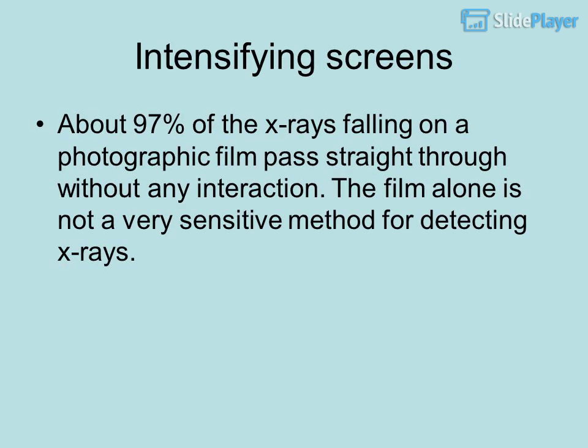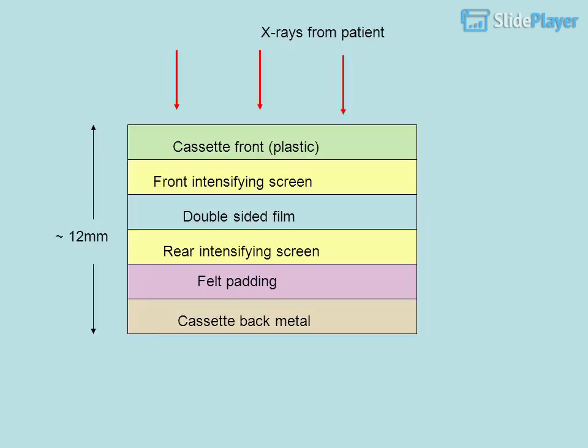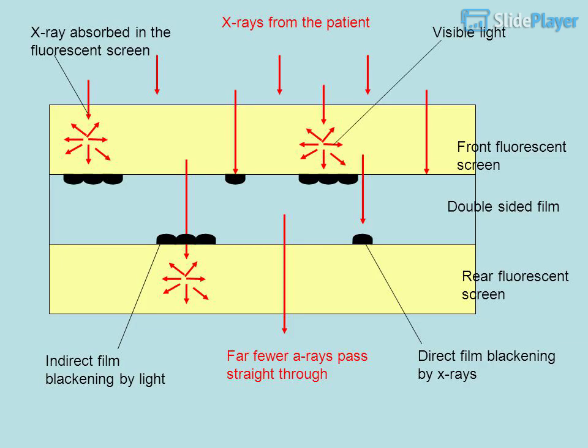Intensifying screens: About 97% of the X-rays falling on a photographic film pass straight through without any interaction, so film alone is not a very sensitive method for detecting X-rays. A cassette contains a front intensifying screen, double-sided film, and a rear intensifying screen with felt padding. X-rays absorbed in the fluorescent screen produce visible light, causing indirect film blackening, while direct film blackening by X-rays is minimal. Far fewer X-rays pass straight through when intensifying screens are used.